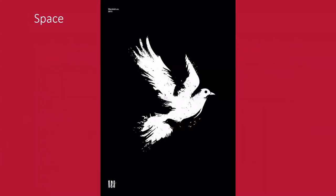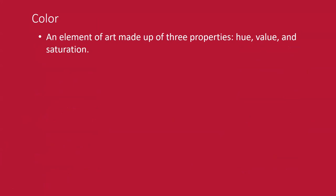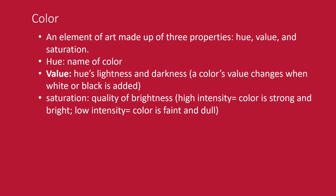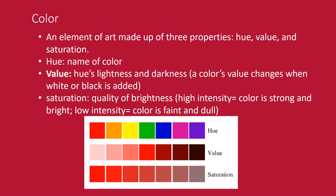Here's an example of negative and positive space — you can see birds used to create that. Color is a huge element. An element of art made up of three properties: hue, value, and saturation. Hue is essentially the name of the color — red, blue, green. Value is the hue's lightness and darkness; a color's value changes when white or black is added. Saturation is the quality of brightness — high intensity is stronger and brighter, low intensity is faint and dull.